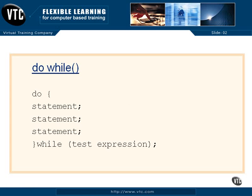Now we're going to take a look at the control statement called a DO WHILE. A DO WHILE is an example of an exit controlled loop.